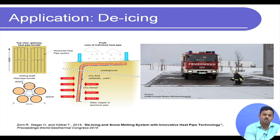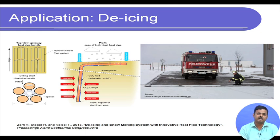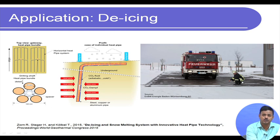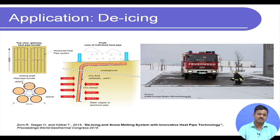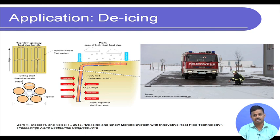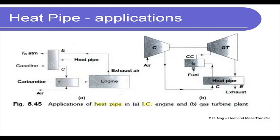The snow melts right away where heat pipes are installed. This de-icing and snow-melting system was presented as innovative heat pipe technology in a 2015 paper showing a practical pilot implementation. While this is not industrial waste heat in the traditional sense, the thermal energy present underground was otherwise unused — so using it for a useful application is a form of waste heat recovery.